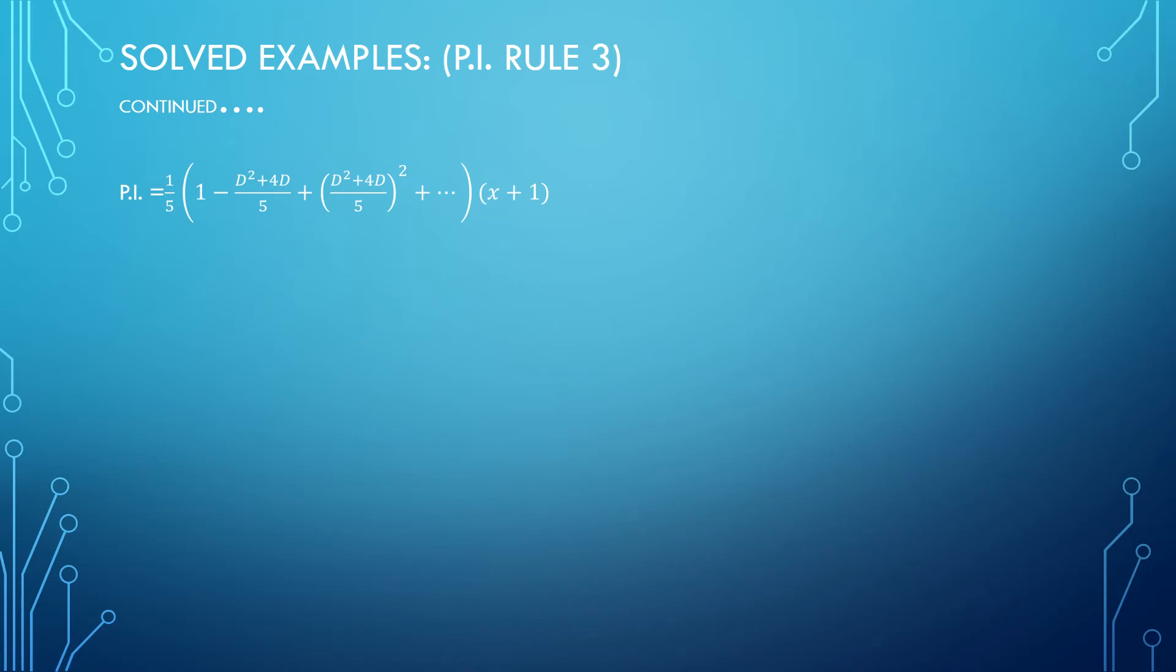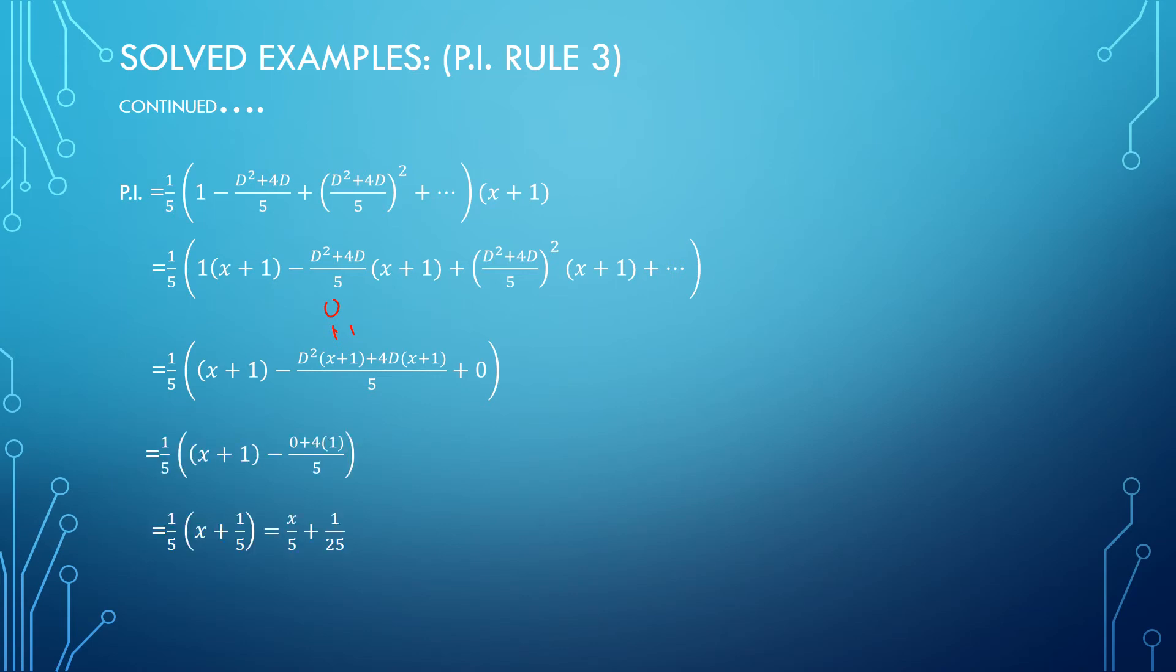I can split the expressions and take x plus 1 with every term. The first term is x plus 1 as it is. d² when operated over x plus 1 gives 0. 4d operated on x plus 1 gives 4. When I simplify further, I get particular integral as x/5 plus 9/25. Then I can write my general solution: y equals complementary function plus particular integral.